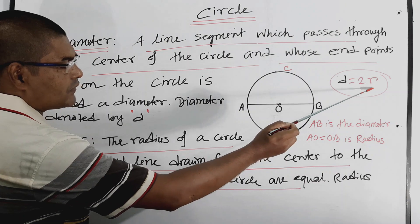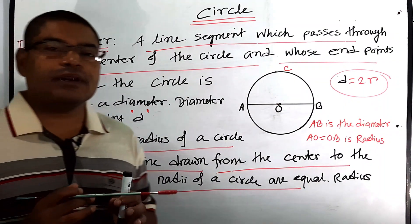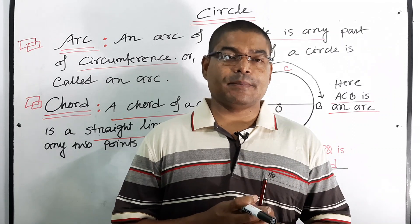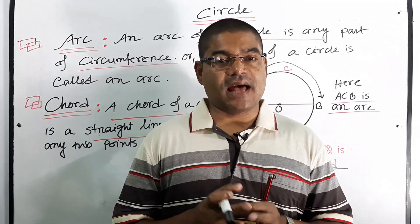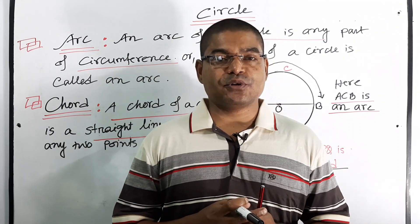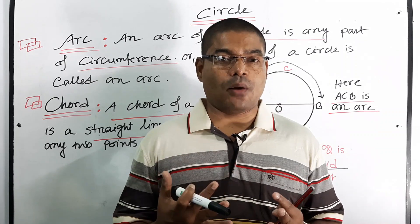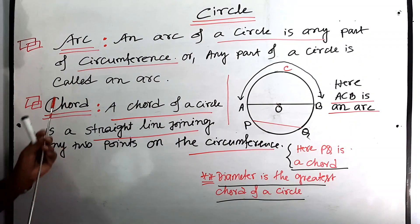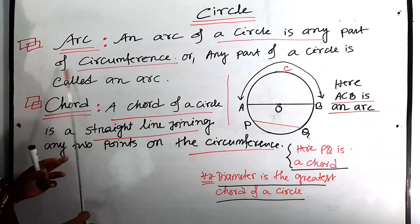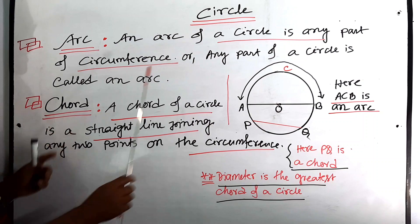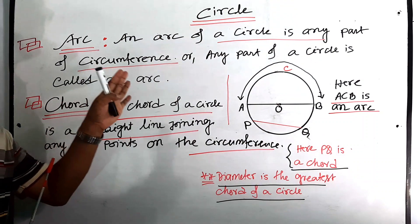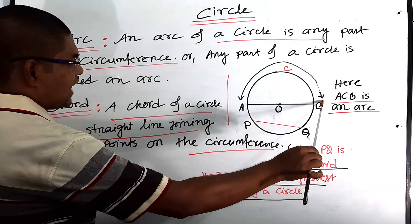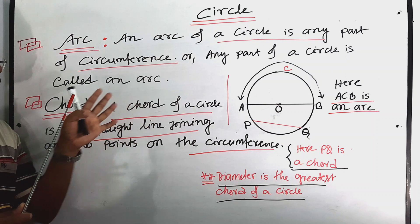Now we will have to know the definition of arc and chord of a circle. An arc of a circle is any part of the circumference. Here you can see arc ACB — up to this point, this is an arc.